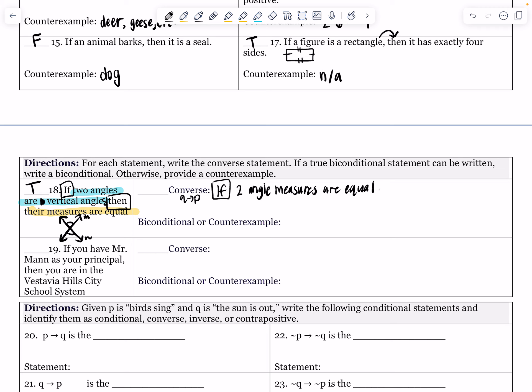So if two angle measures are equal, just makes a little bit more grammatical sense, then the two angles are vertical. So there we said if yellow then blue. We just made it a little bit more grammatically correct. Totally fine if you just said if their measures are equal, then two angles are vertical angles. That is actually going to be false. Just because two angle measures are equal does not necessarily mean that they're vertical.